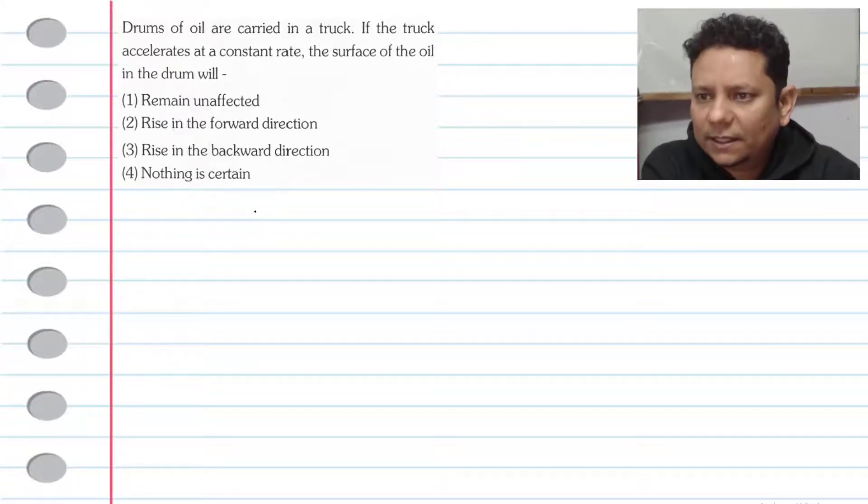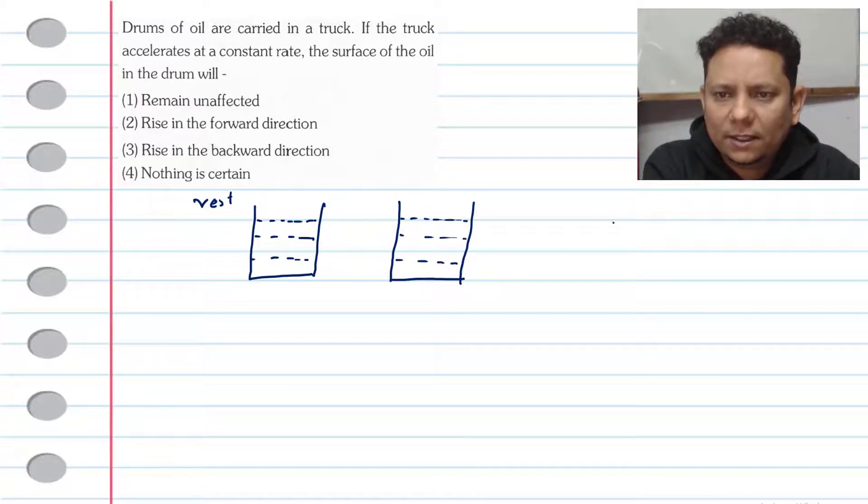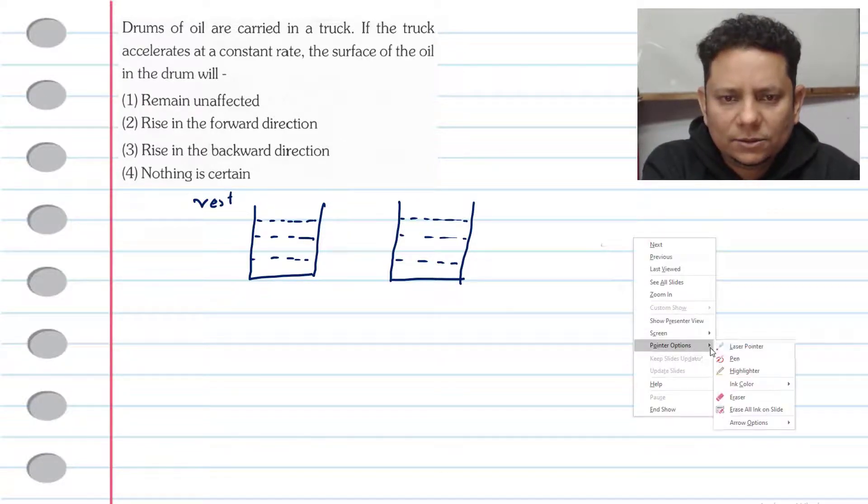Let us say this is the drum. This is the surface at the horizontal level. This is the scenario when it is at rest, the drum. This is the original level. Let me change the color of the pen. So, let us say this is the same.